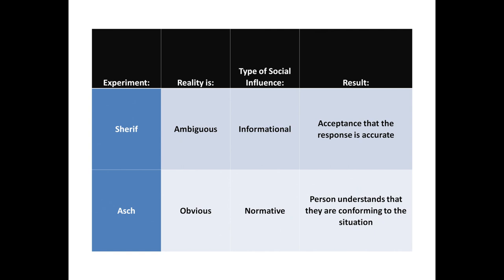In the next video, I talk about how I joined a cult in 1980 when I was 16 years old — the Moonies. As you listen to that video, I'd like you to think about Asch and Sharif types of social influence as they pertain to cult indoctrination.